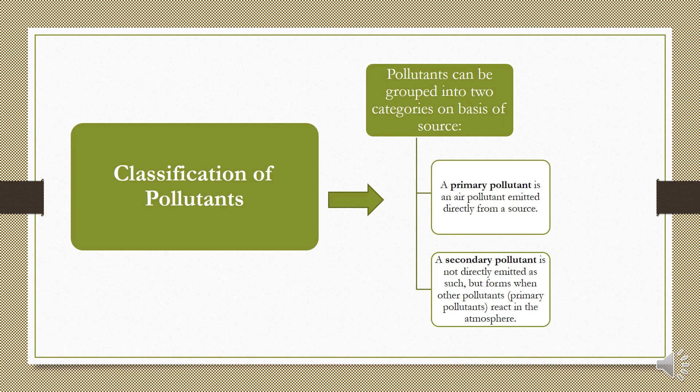A secondary pollutant is not directly emitted as such, but forms when other pollutants — called primary pollutants — react in the atmosphere. Secondary pollutants are those which form by the combination of two or more primary pollutants. They are not pollutants in their original form but cause pollution when two or more primary pollutants combine together. For example, acid rain is a secondary pollutant.